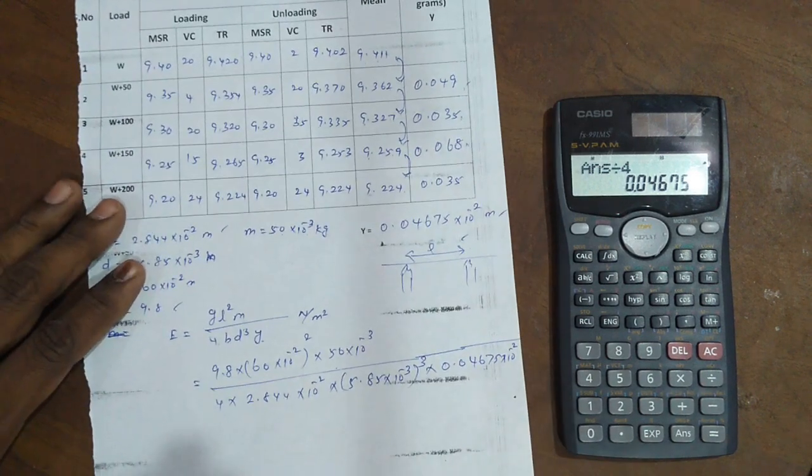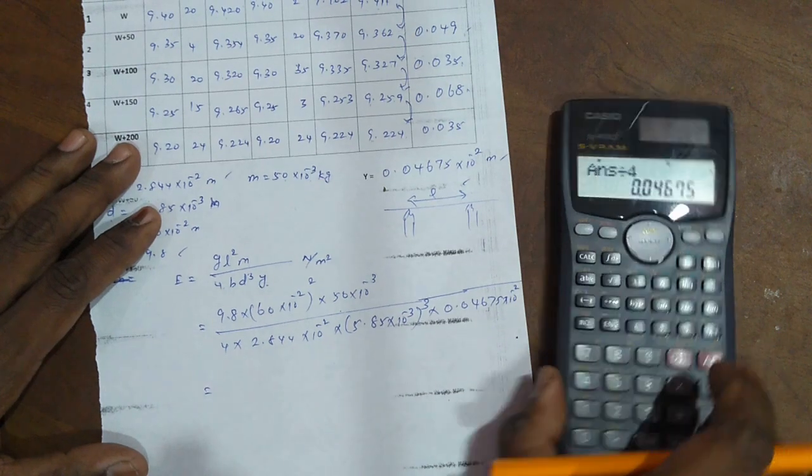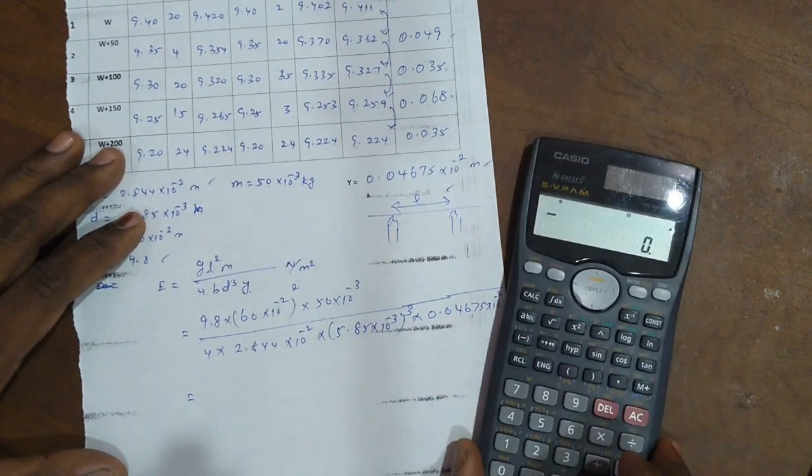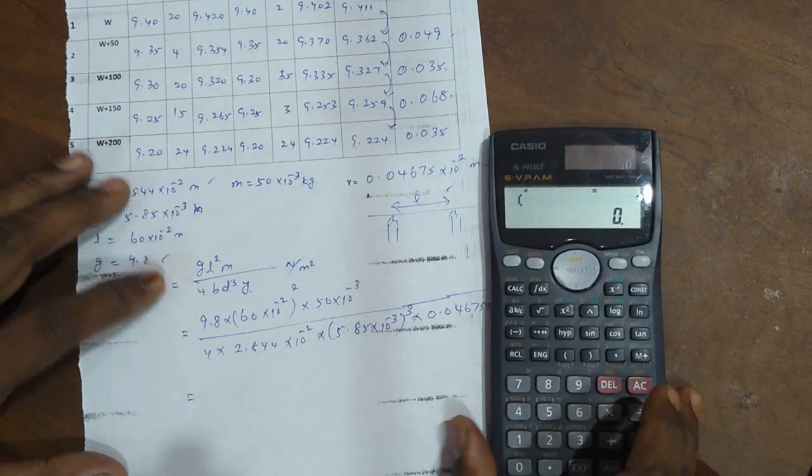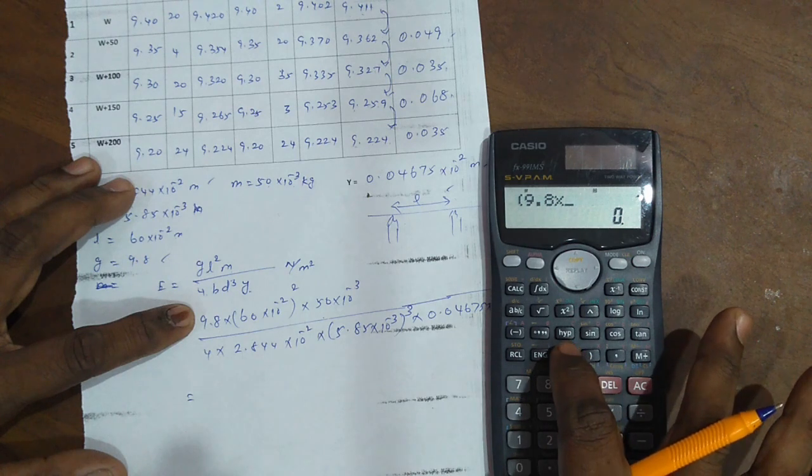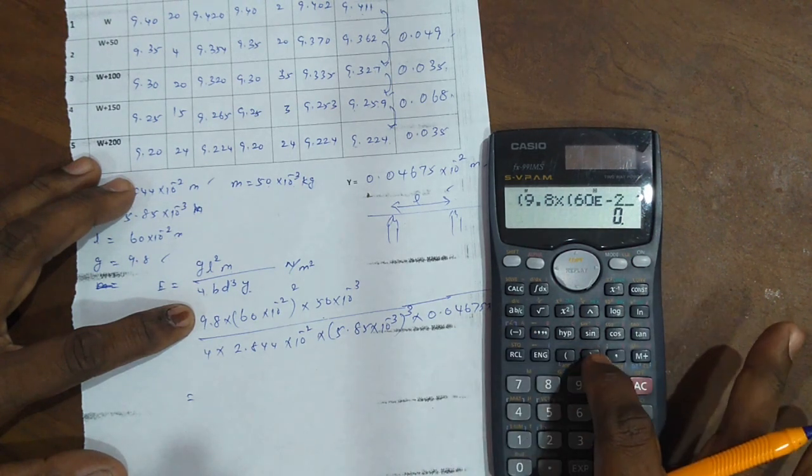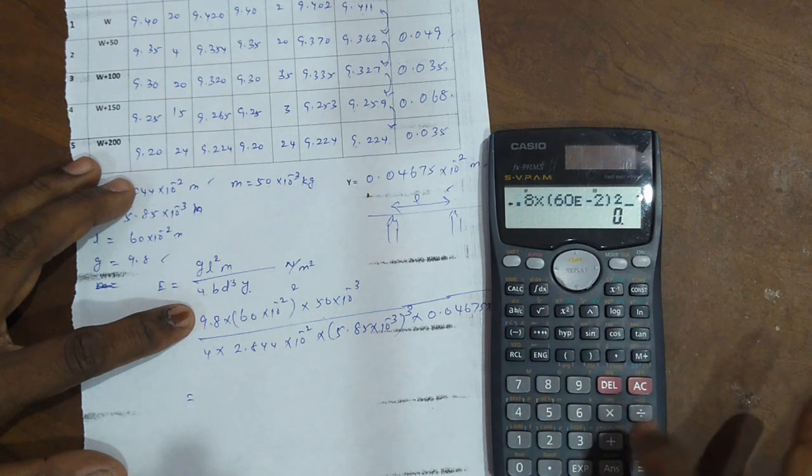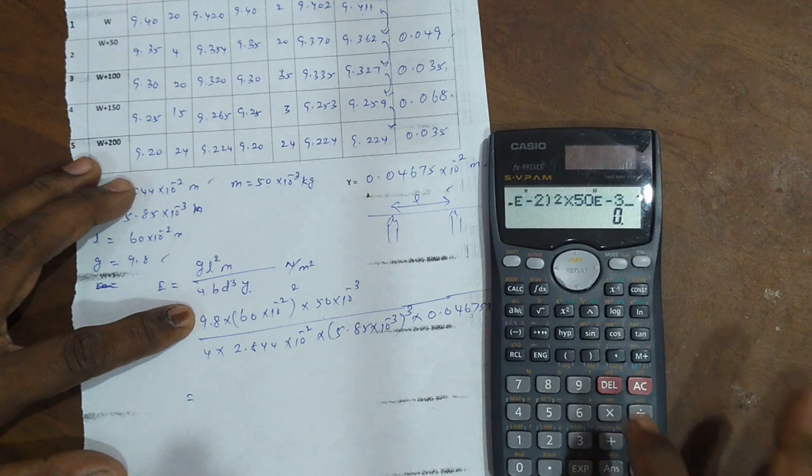Now you see the calculator. The answer: open bracket, 9.8 into open bracket, 60 exponential minus 2, close the bracket, all squared into 50 exponential minus 3. Close the bracket.